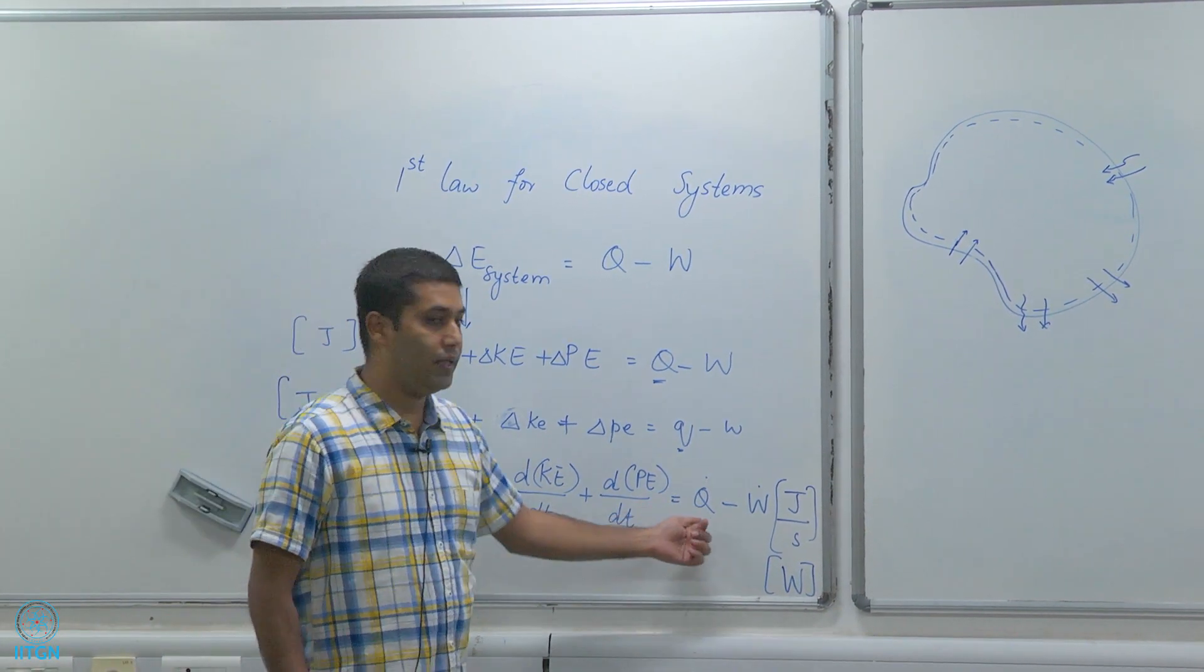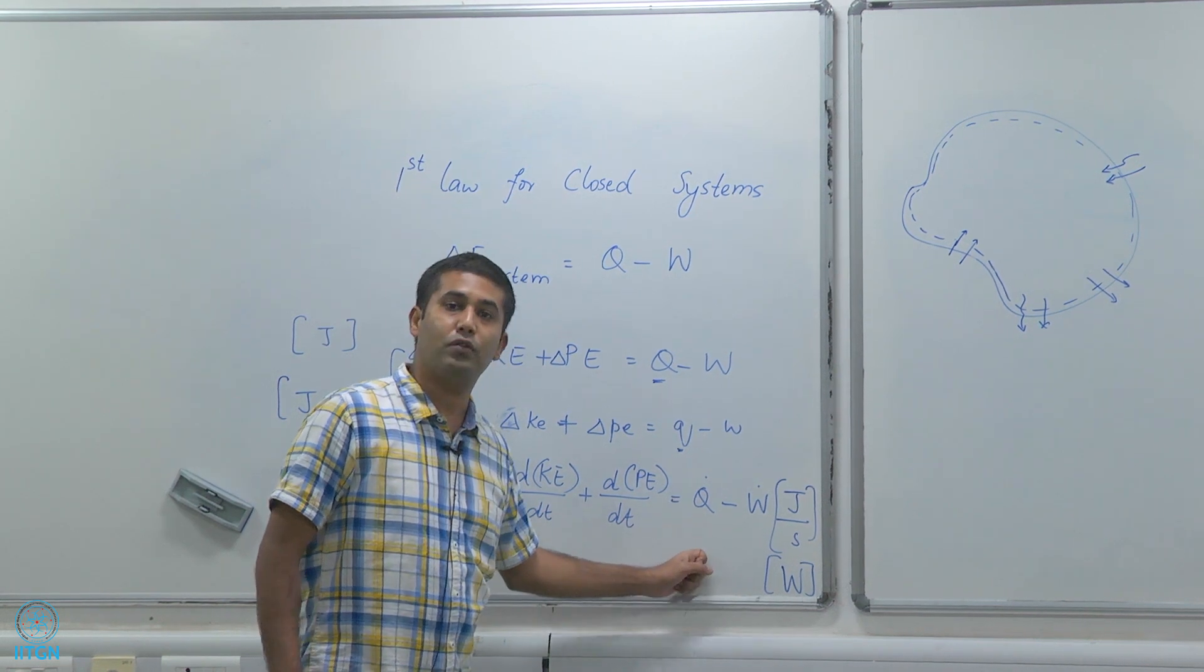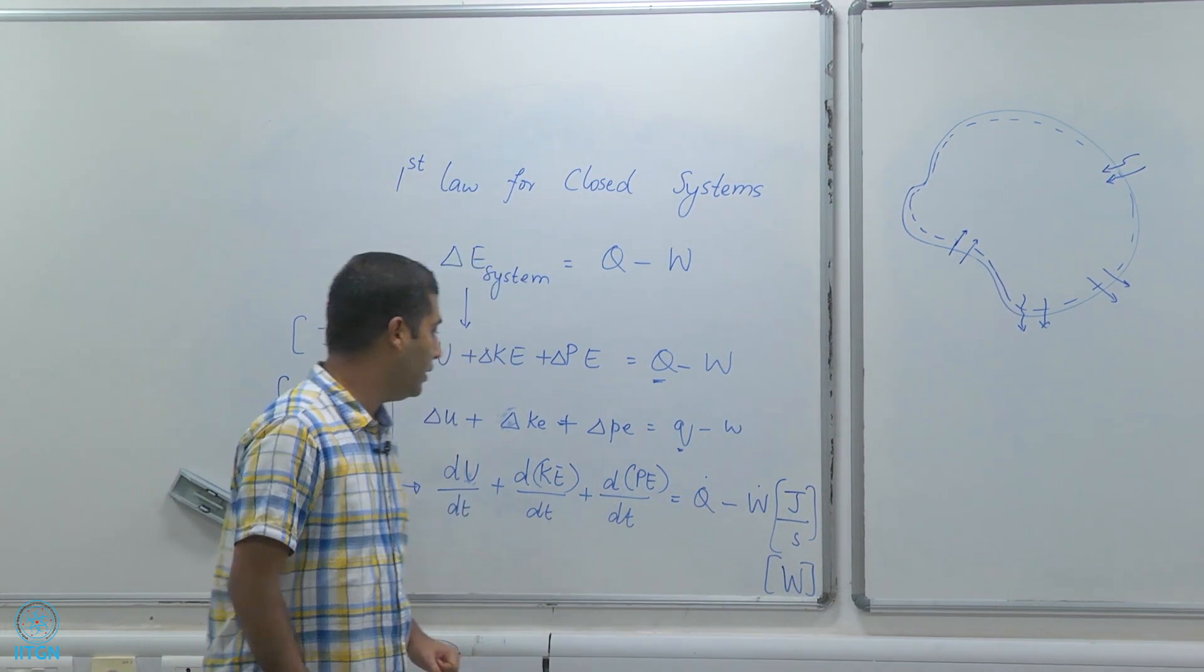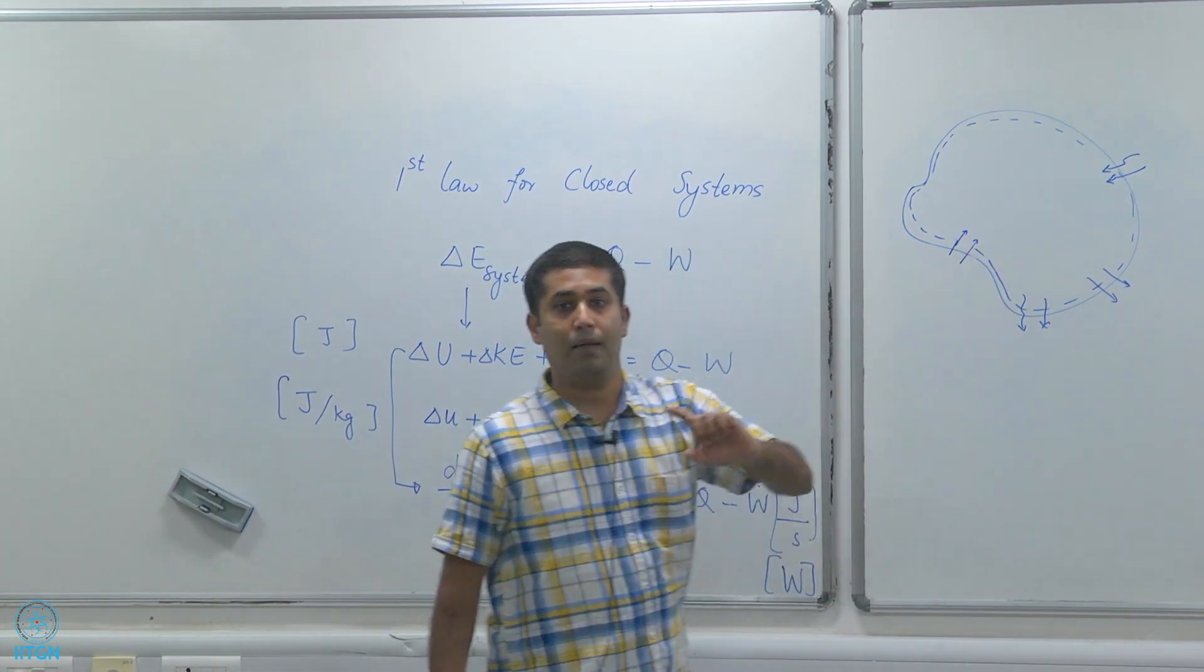An important distinction is we never write dQ/dt where dQ with respect to time, we do not write dW/dt - we just write Q dot because that is what is crossing the boundary per unit time.